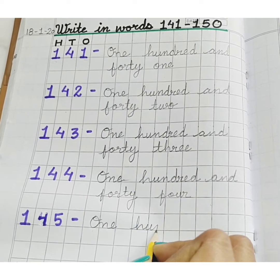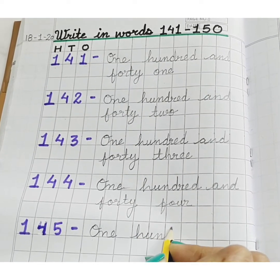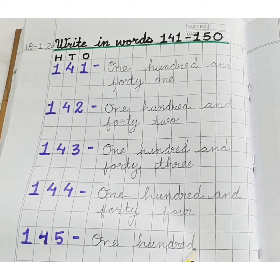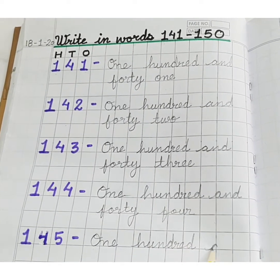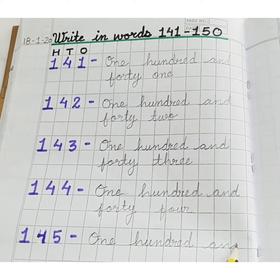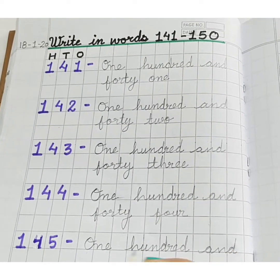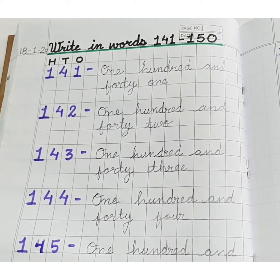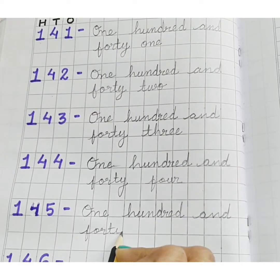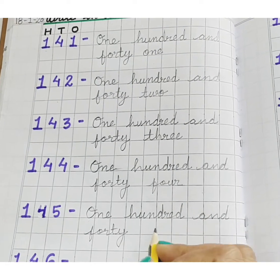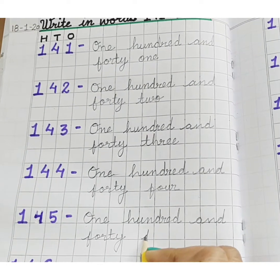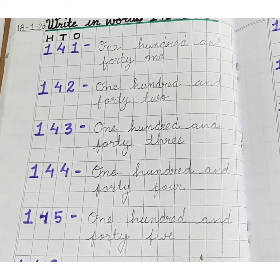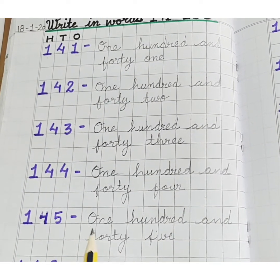ONE HUNDRED. AND F, O, R, T, Y — FORTY. F, I, V, E — FIVE. 5. One Hundred and Forty Five. 145.